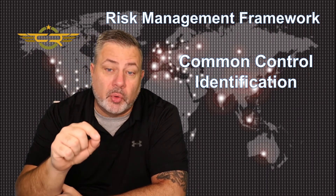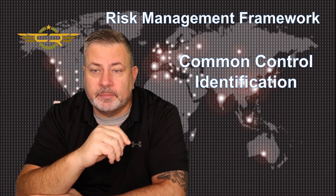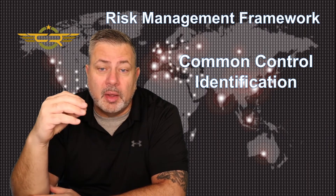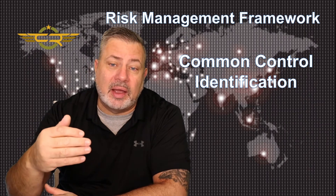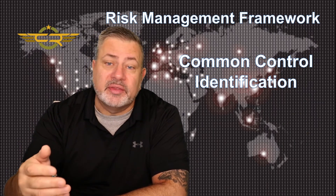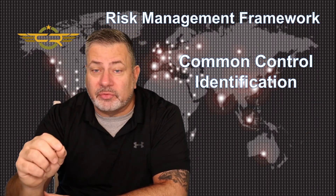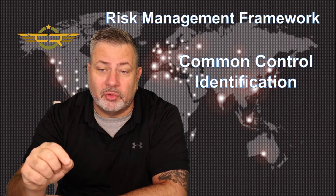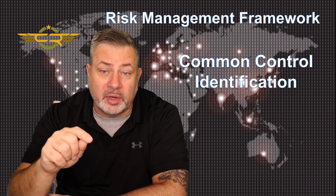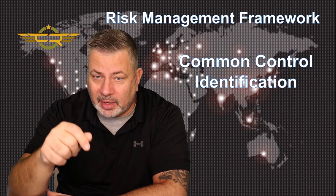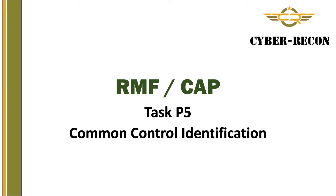Common controls are one of the most important benefits of the RMF. With common controls, groups of controls can be developed at higher levels in the organization and then allowed to be inherited by the system owner. This allows the system owner to actually implement less controls in their control set. In this module, we'll talk about organizational level common control identification. This is Task P5 or PREPARE 5 Common Control Identification, and it takes place at the organizational level.